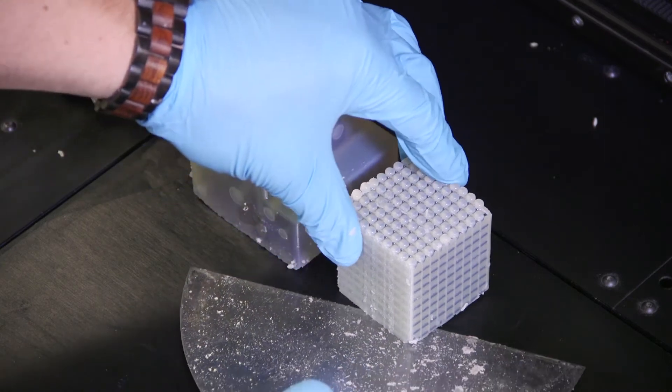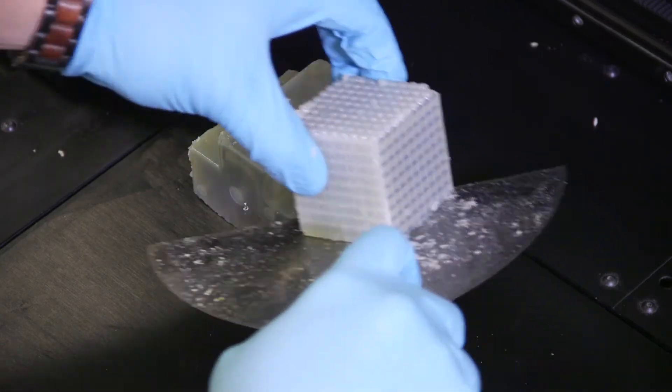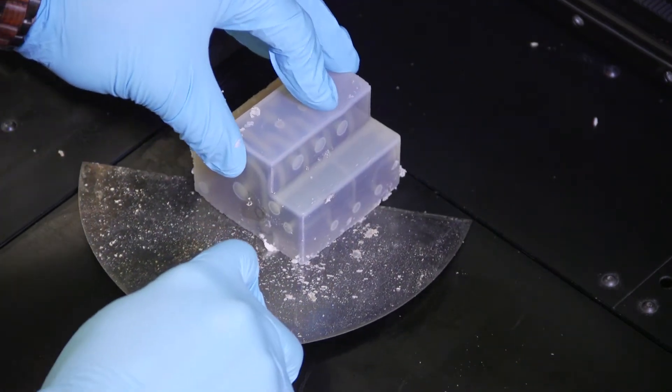Once printing is completed, remove the part using a scraper or spatula, taking care not to pry or bend the model.